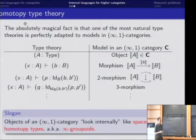So the slogan is that just like objects of an ordinary category look like sets internally, objects of an (∞,1)-category look like spaces, or homotopy types, or ∞-groupoids, these things that the topological spaces and simplicial sets model from classical homotopy theory.